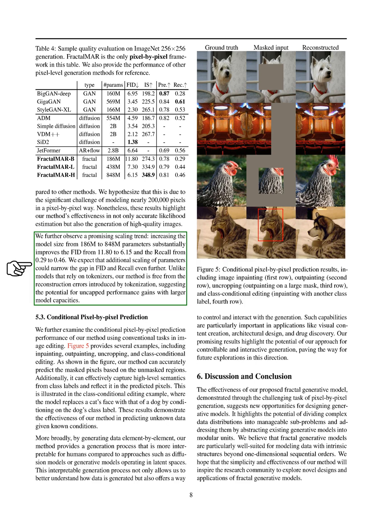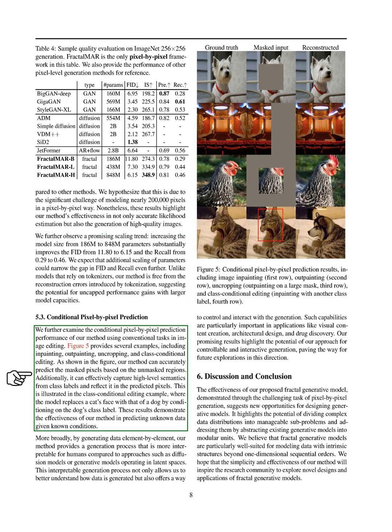We examine how well our method performs in conditional pixel-by-pixel prediction through various image editing tasks. We provide examples such as inpainting, outpainting, uncropping, and class-conditional editing. Our method successfully predicts masked pixels by using information from the unmasked areas. It also captures high-level meanings from class labels, as seen when we replace a cat's face with a dog's face by using the dog's class label. These results show that our method effectively predicts unknown data based on known conditions.